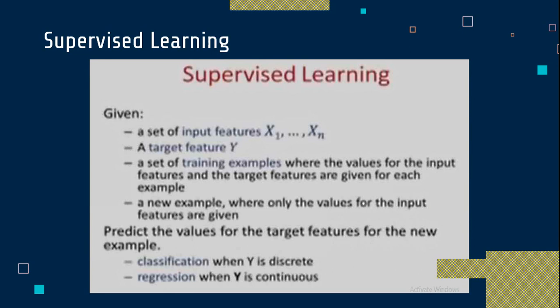Machine learning is broadly divided into three types: supervised machine learning, unsupervised, and reinforcement learning. If you have labeled data, you apply supervised learning. If you have unlabeled data, you use unsupervised learning. If your system adjusts itself according to the environment, that is reinforcement learning.